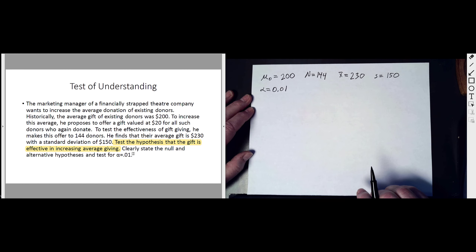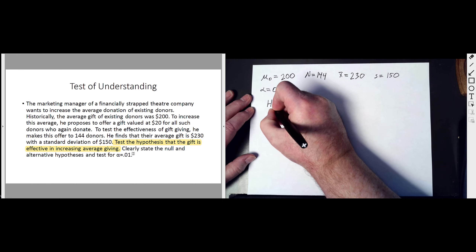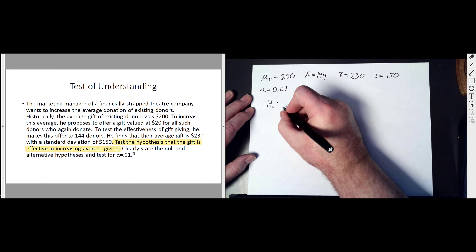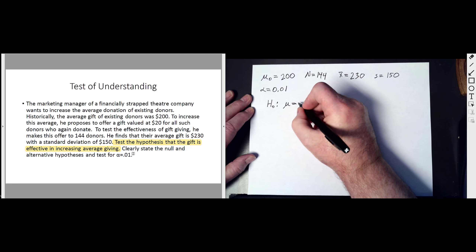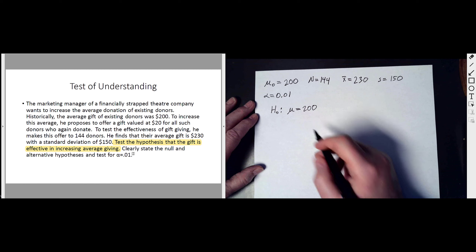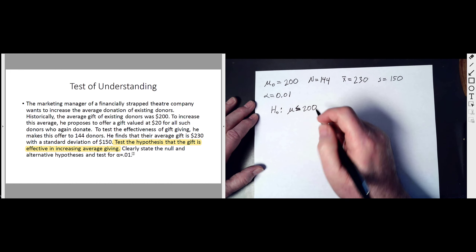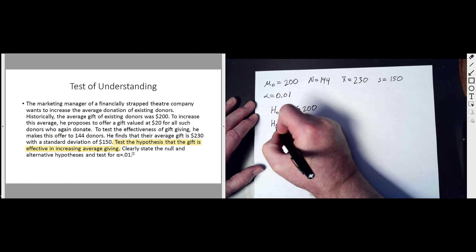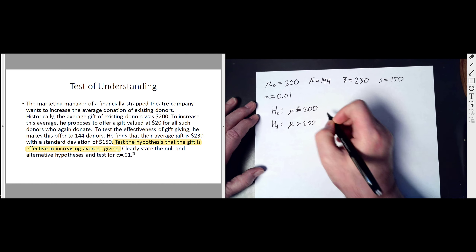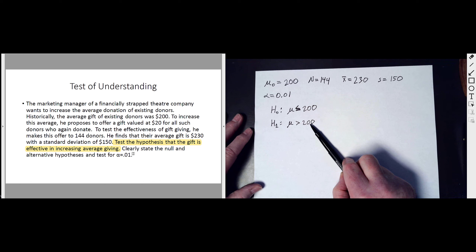We need to clearly state the null and alternative hypotheses. Our null hypothesis H0 is that mu remains at $200 or less — we include the less-than symbol for completeness since we're doing a one-sided test. Our alternative hypothesis H1 is that average donations increase above $200. So the null hypothesis is no change and the alternative hypothesis is an increase.